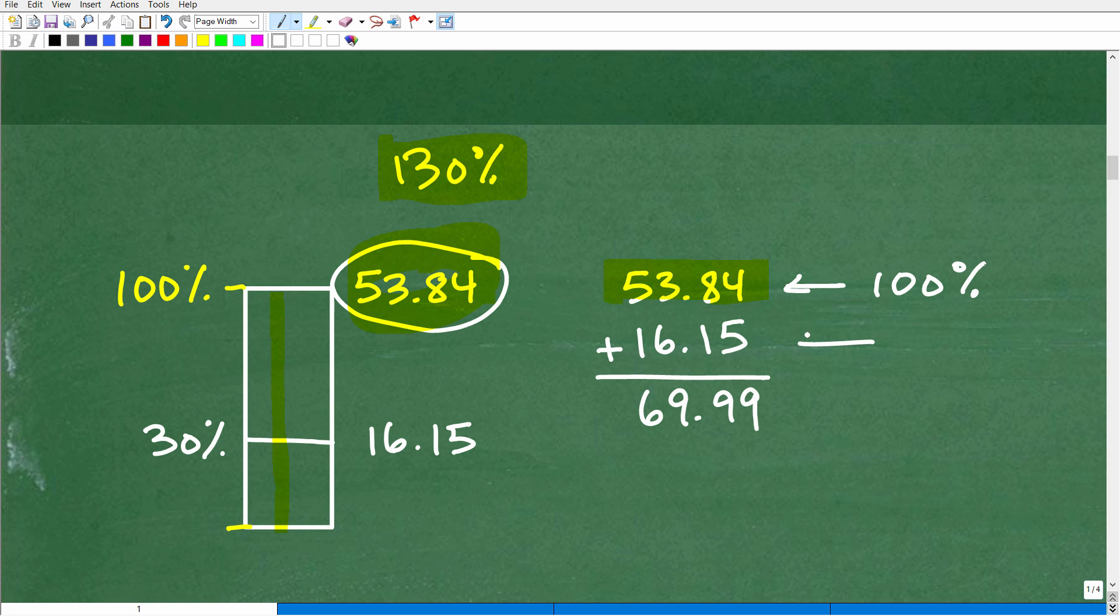Now, we need 30% more, right, to get to 130%. So what's 30% of 53.84? Well, 30% of 53.84, I could take that 0.3 and multiply by 53.84, but it's going to be 16.15. All right, so if we add up the 100% and the 30%, you're going to get 69.99, which is effectively 70. And, of course, let's review the problem here.